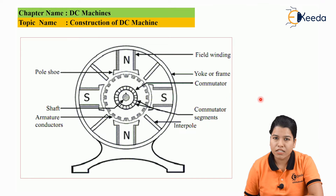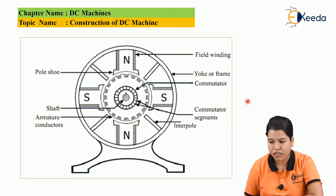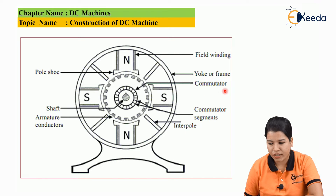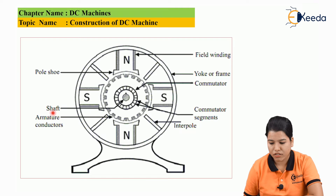The basic construction of DC machine is as shown in figure. The main parts of the DC machine are: field winding, yoke or frame, commutator, commutator segments, interpoles, shaft, armature conductor, and pole shoe.